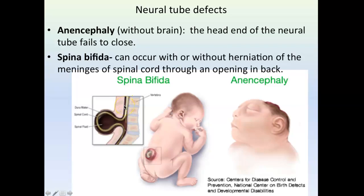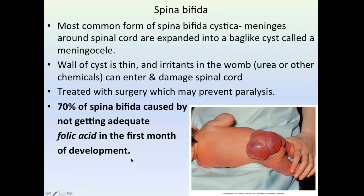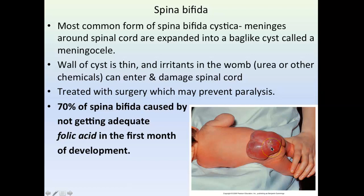Spina bifida can occur with or without herniation. The meninges can herniate through the skin in one kind — this is spina bifida cystica, where the meninges around the spinal cord are expanded into a bag-like cyst. The danger is that this wall is very permeable, and substances in the baby's urine inside the womb can cross through the cyst and irritate the developing spinal cord.